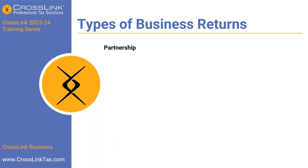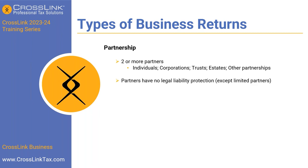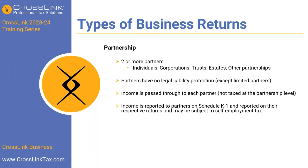The next type of business return is partnerships. Partnerships involve two or more partners — these can be individuals, corporations, trusts, estates, and even other partnerships. The partners have no legal liability protection except when they become limited partners. Income is passed through to each partner and is not taxed at the partnership level, but rather at the individual level. Income is reported to partners on Schedule K-1 and may be subject to self-employment tax.